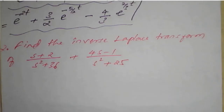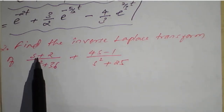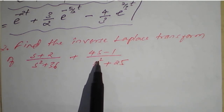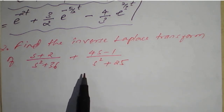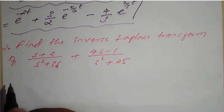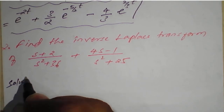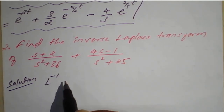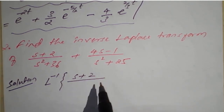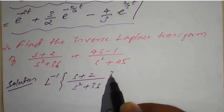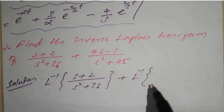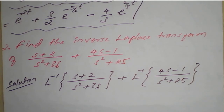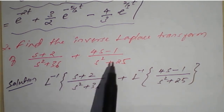Next example: find the inverse Laplace transform of s plus 2 divided by s squared plus 36, plus 4s minus 1 divided by s squared plus 25. Applying linear property: L inverse of (s plus 2) divided by s squared plus 36, plus L inverse of 4s minus 1 divided by s squared plus 25.